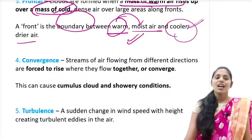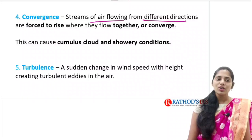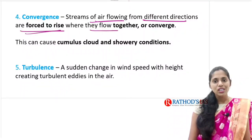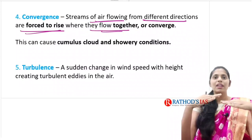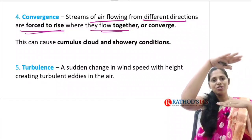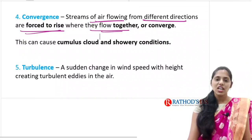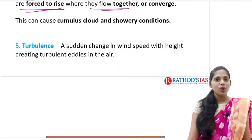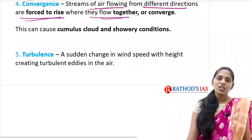Convergence - streams of air flowing from different directions, when forced to rise, leads to formation of cumulus clouds. Convergence is when two air masses come together, the warm air moves upward and forms clouds. Next is turbulence - because of sudden change in wind speed with height, that also leads to formation of clouds. These are the important factors that lead to formation of clouds.